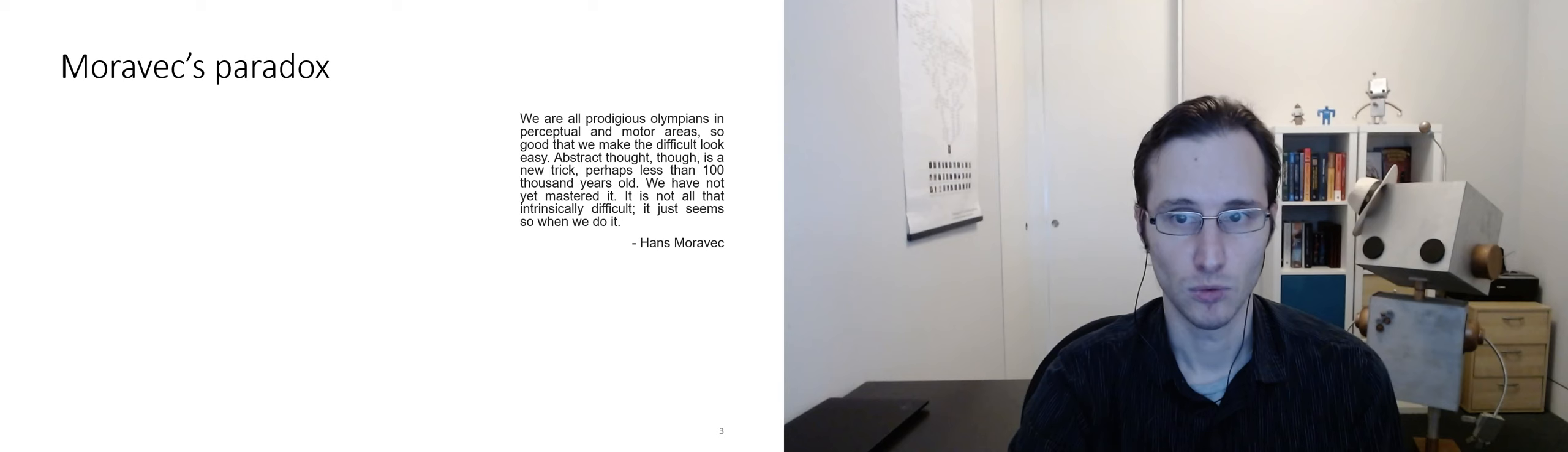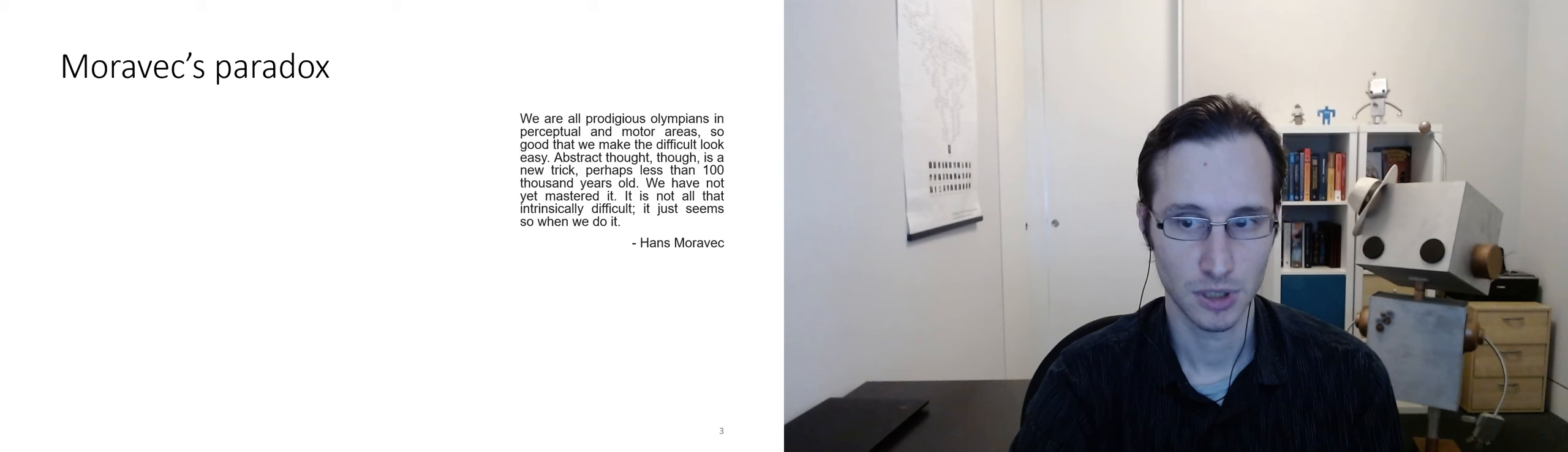Here is a concise summary of Moravec's paradox, described by Hans Moravec. We are all prodigious Olympians in the perceptual and motor areas. So good that we make the difficult look easy. Abstract thought, though, is a new trick, perhaps less than 100,000 years old. We have not yet mastered it. It is not all that intrinsically difficult. It just seems so when we do it.